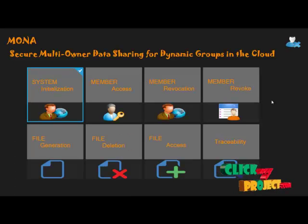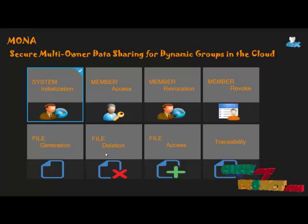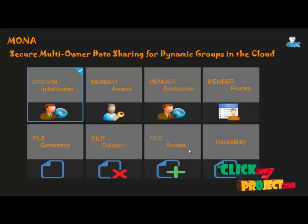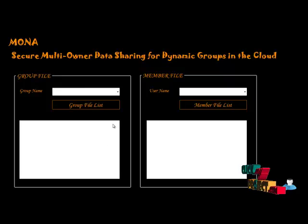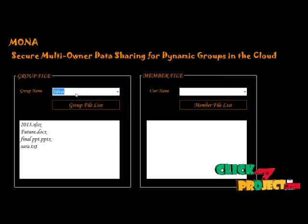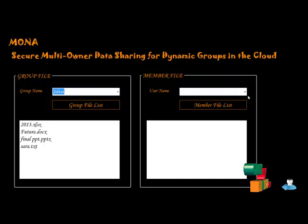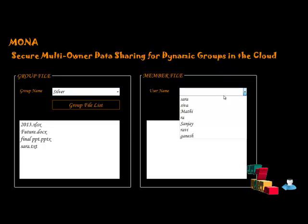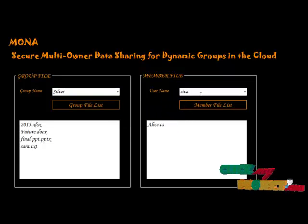Then we check the revocation details and the member revoke option. For file generation, the file deletion details are formed for the group member. Checking file generation details — this shows file generation for group members. The silver details for the files and member files for silver are listed. The member file is null; this is Siva's user file.